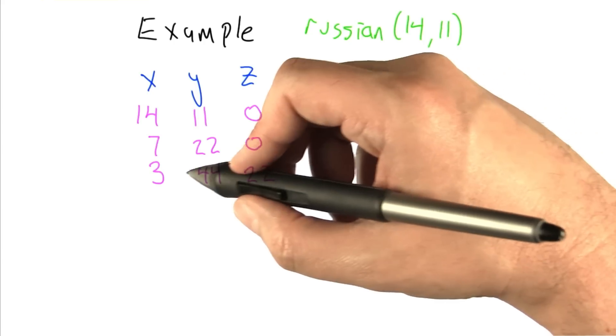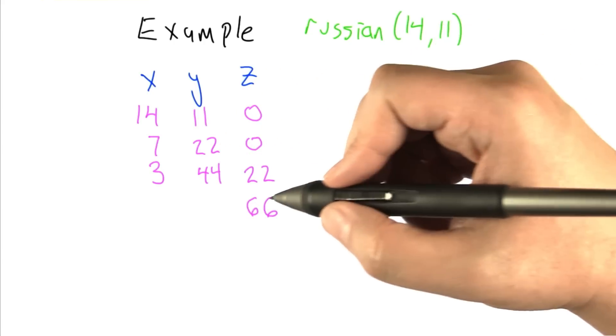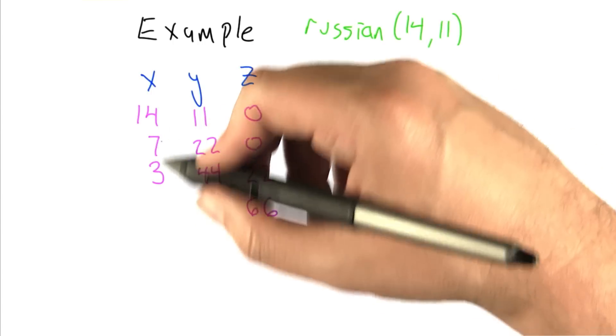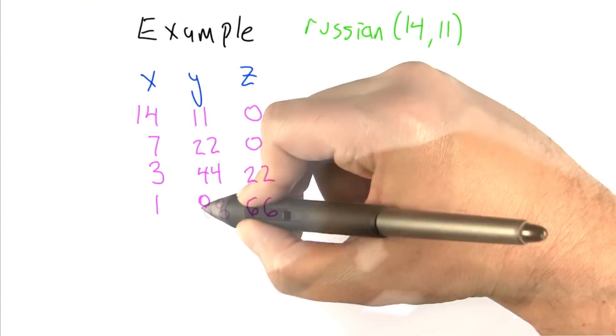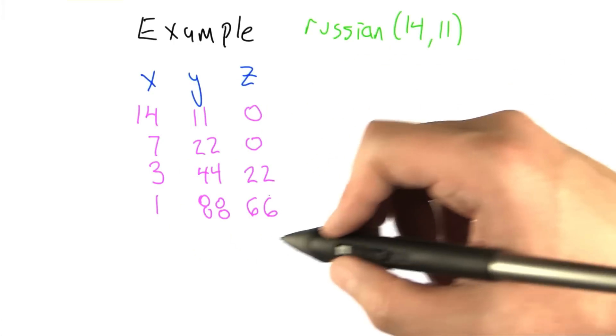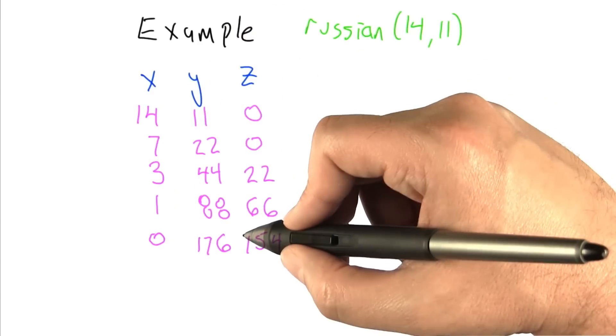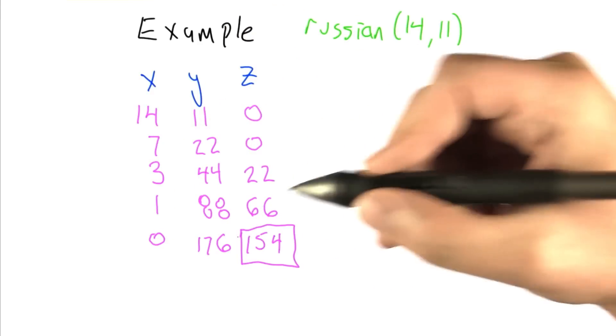So the next time through the while loop, we see that x is 3, which is odd. So that tells us to add 44 into z, giving it a total of 66. Then we halve x rounding down and double y. Go back up to the top of the while loop, we see x is odd again. So we add y into z. Then we halve x rounding down and double y. At which point x becomes 0 and it returns the value of z, which lo and behold is 154.